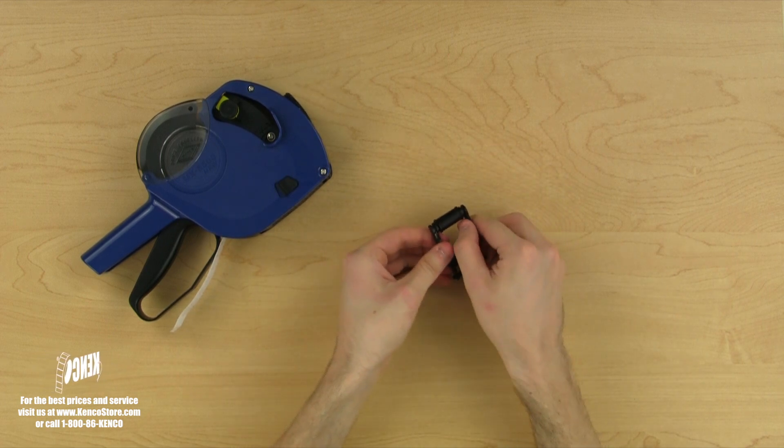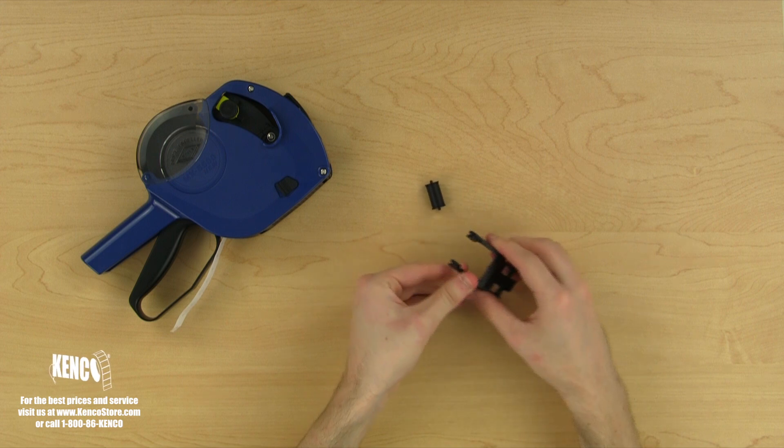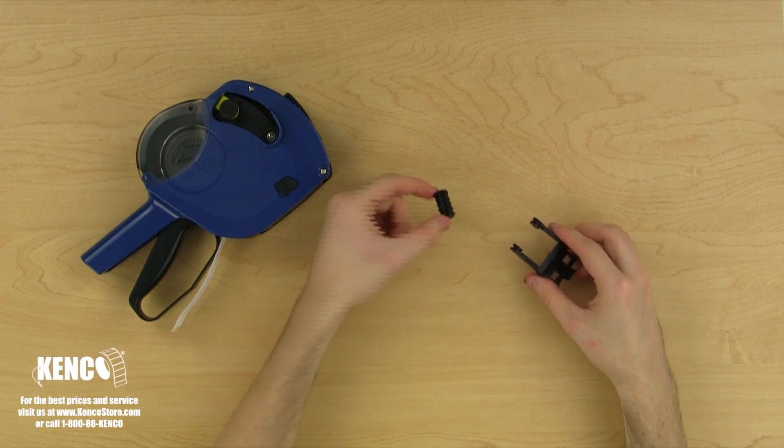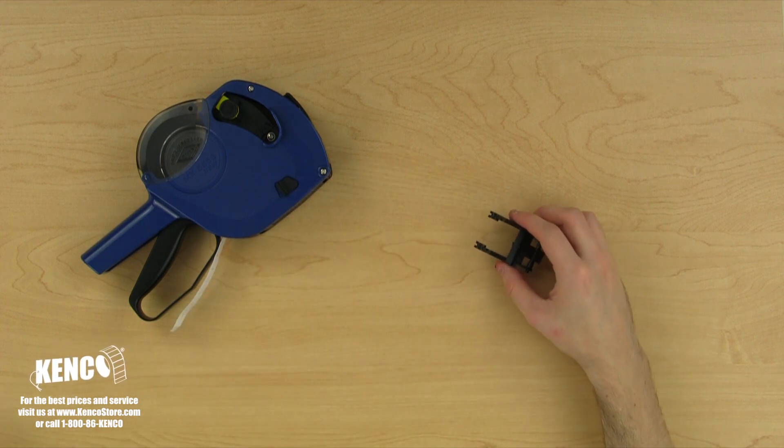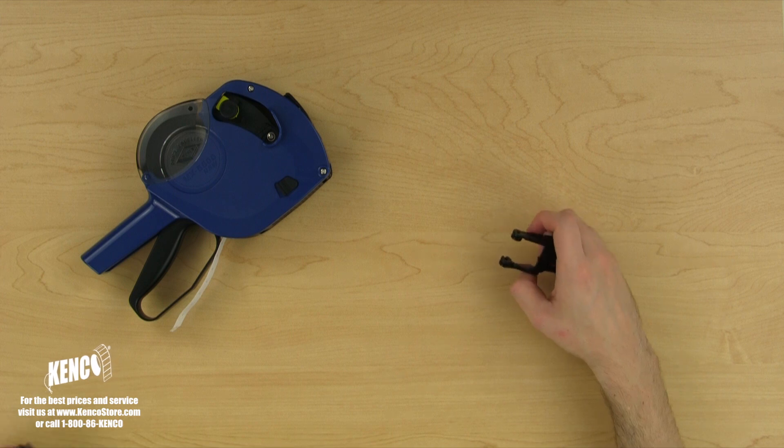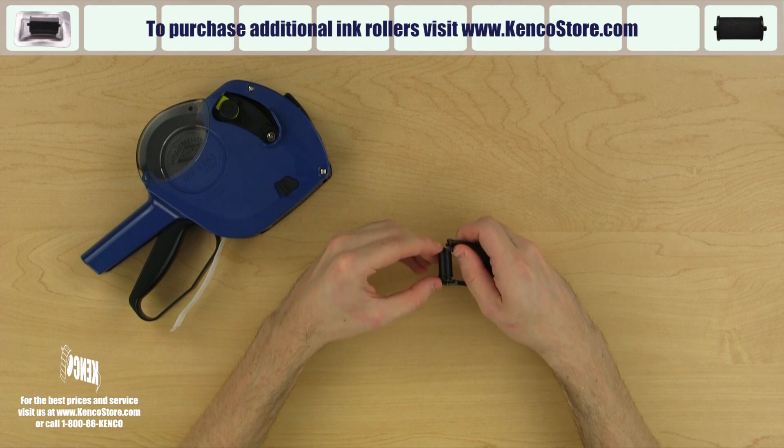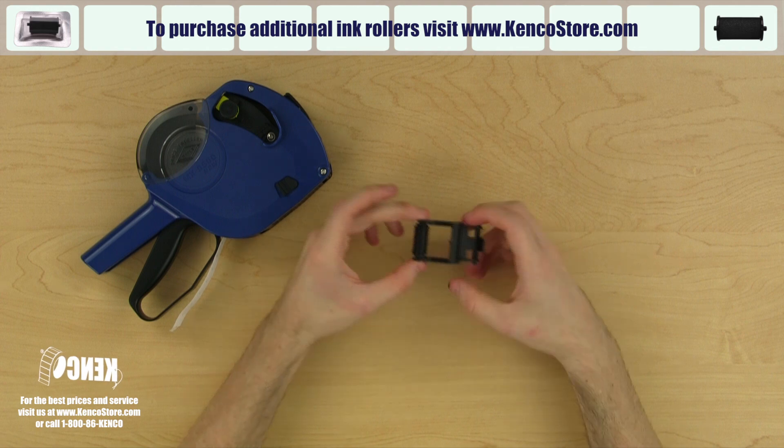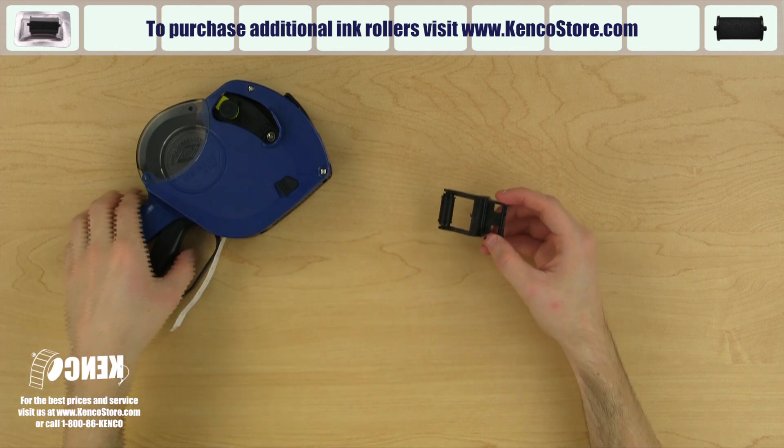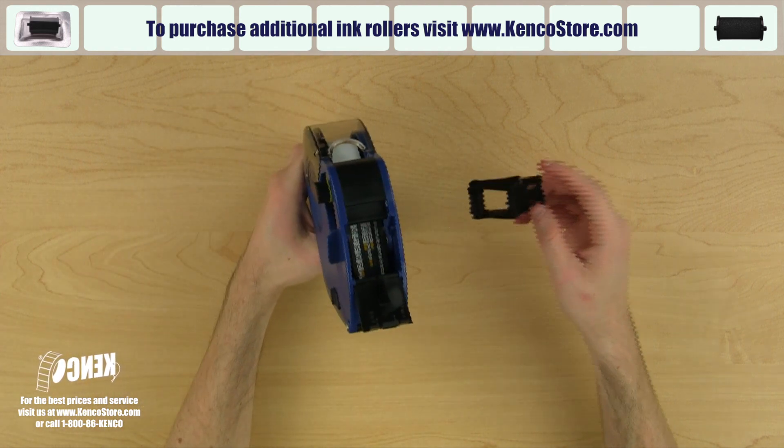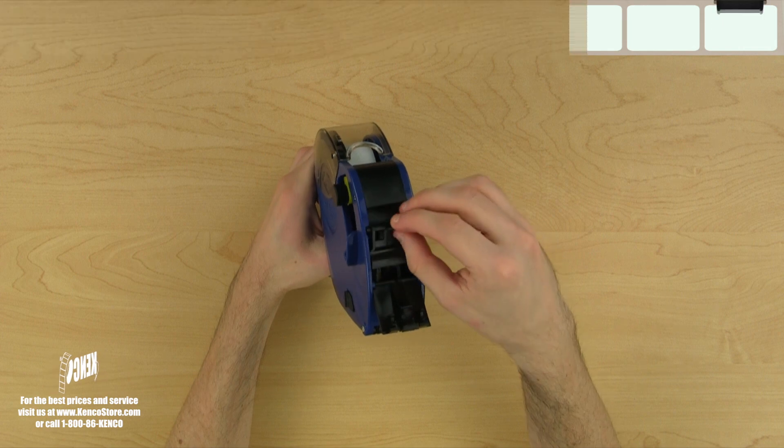To remove the old ink roller, gently pull apart the ink roller arm. The ink roller should pop right off. Once the ink roller is removed, we will get a replacement ink roller from its packaging. Slide it between the ink roller arms and snap it into place. Additional ink rollers can be purchased from kencostores.com. Now we just need to slide the ink roller assembly back into the gun and we can close the cover.